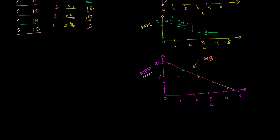Just as a reminder, this horizontal axis here is the quantity of labor per hour — so this is people per hour that are working at the firm. And the vertical axis here, the marginal product revenue, you could view as the marginal dollars or the incremental dollars that you're getting per person, per hour.